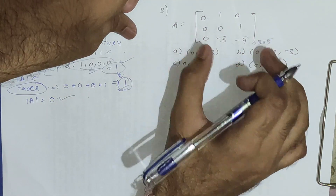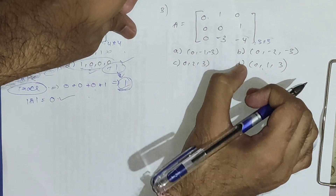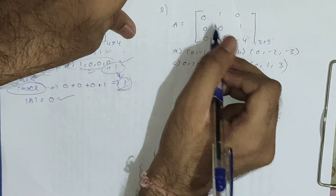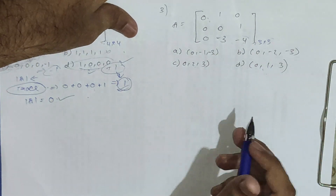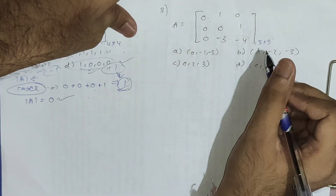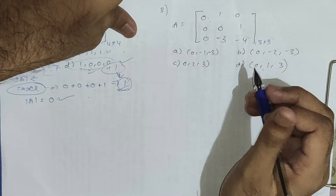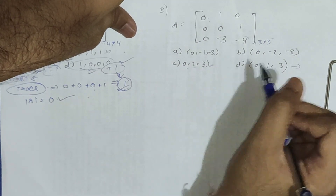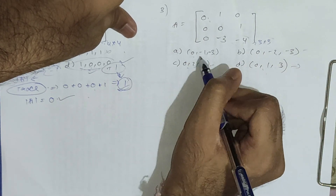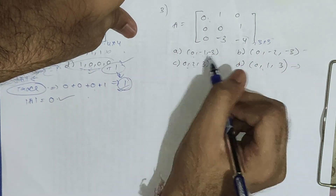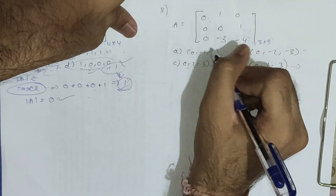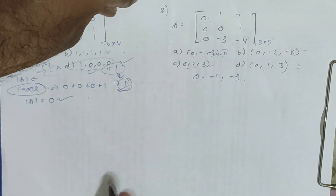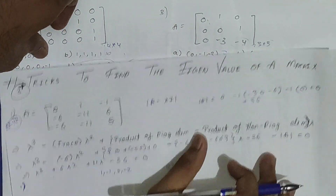Third example: another matrix where we need to find eigenvalues and options are given. The trace is 0 plus 0 plus minus 4, so trace equals minus 4. We check each option for a sum of minus 4: option A (1, 3, 4) — no; option B (2, 3) — no; option C (minus 2, minus 3) — no; option D (0, minus 1, minus 3) — sum is minus 4. So the eigenvalues are 0, minus 1, and minus 3.